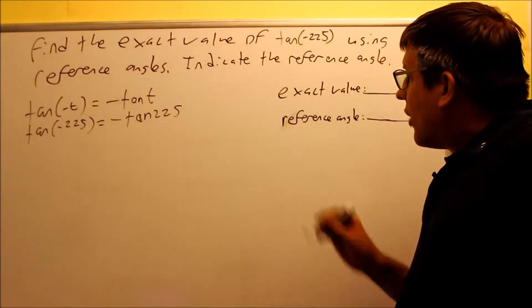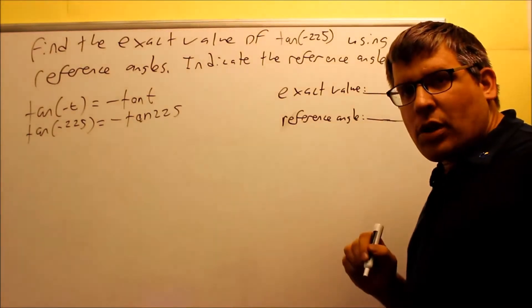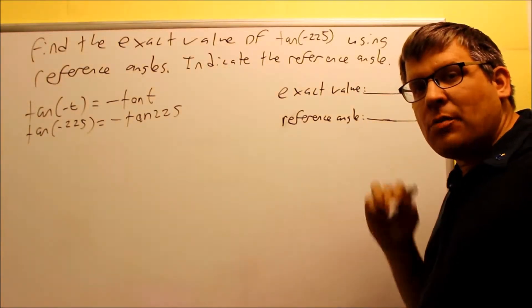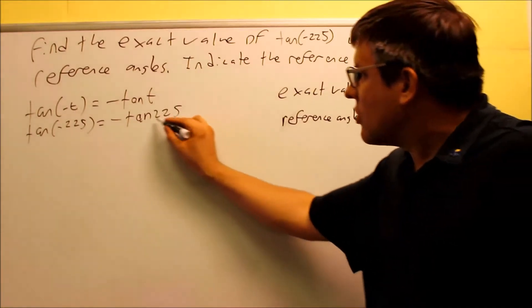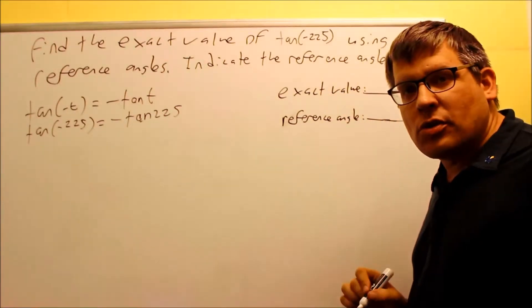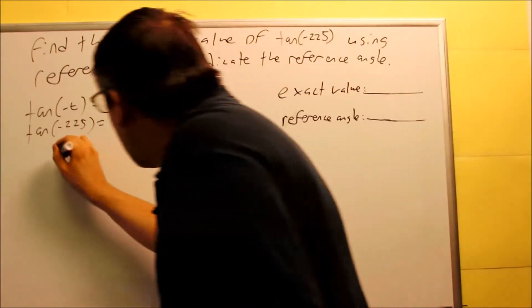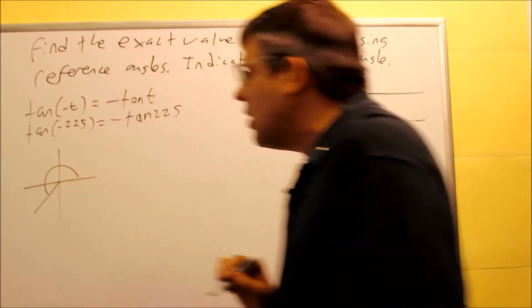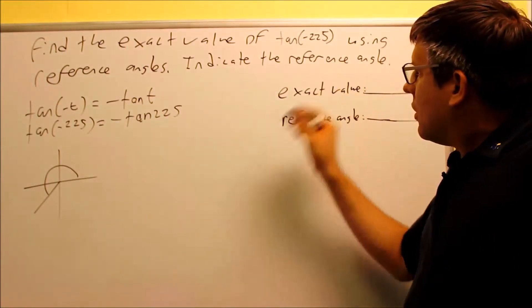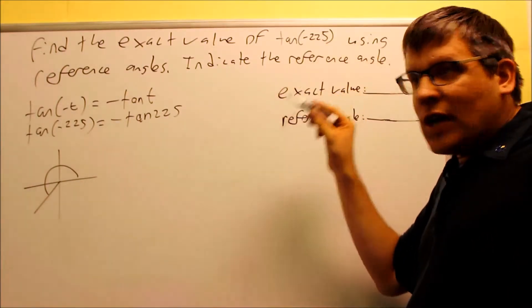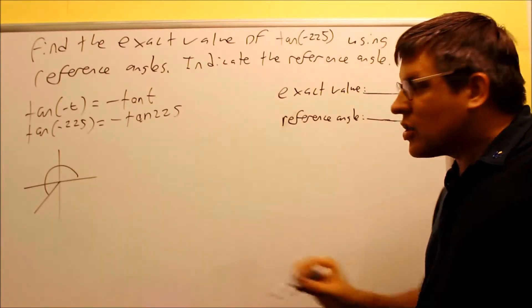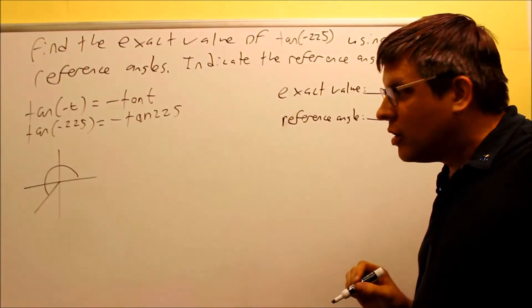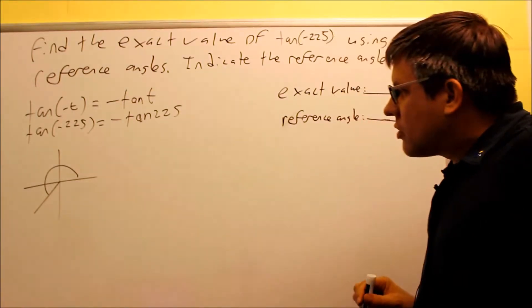Now that I have this, I need to find out what the exact value is by doing the three-step process. This involves finding a reference angle. It's probably better to draw this, at least the 225. I'm going to draw that in standard position so I'll be able to see what quadrant that's in. 225 is down here, in the third quadrant.